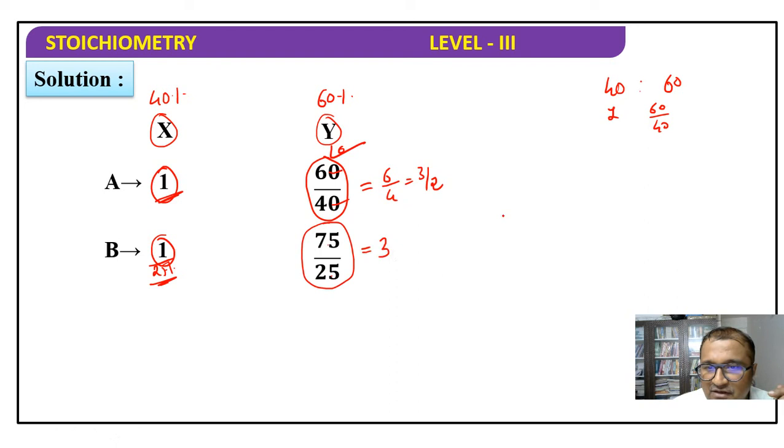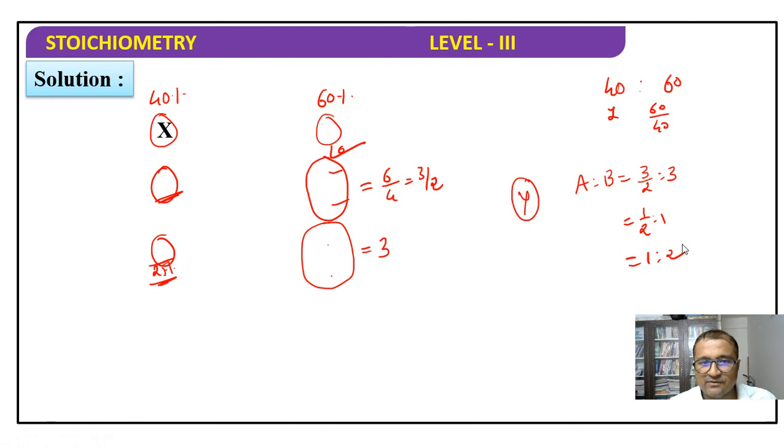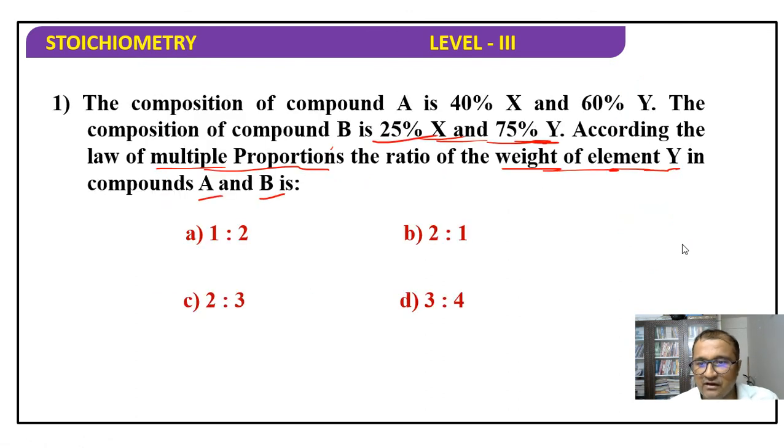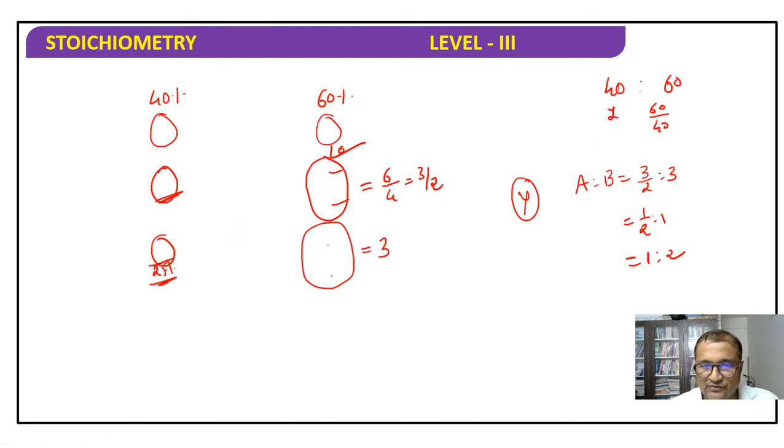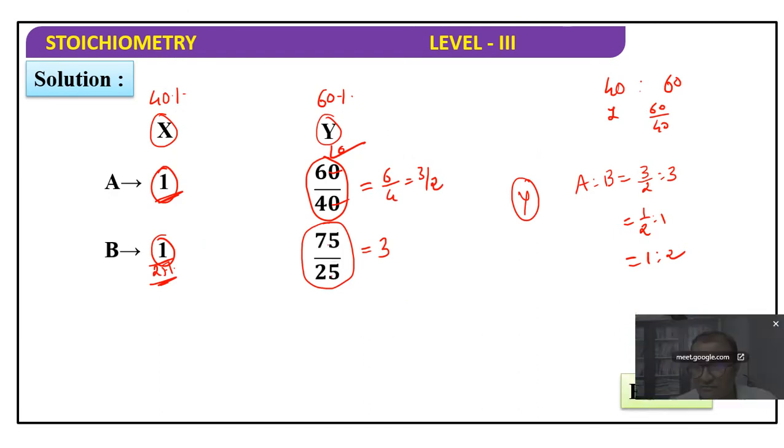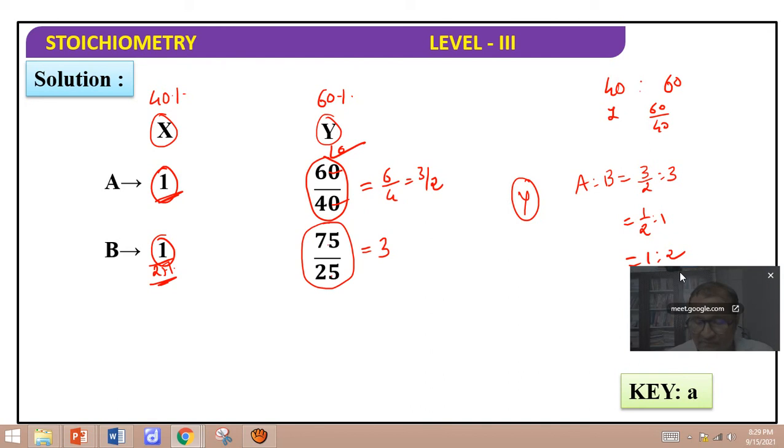So for element Y in compound A to compound B, the ratio is 3 by 2 is to 3, which is 1 by 2 is to 1, or it is 1 is to 2. So here our answer is 1 is to 2.